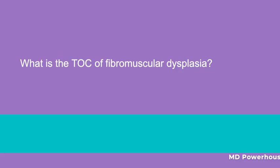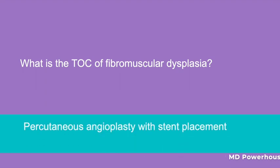What is the treatment of choice for fibromuscular dysplasia? Percutaneous angioplasty with stent placement.